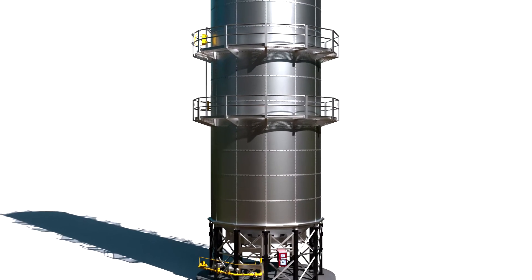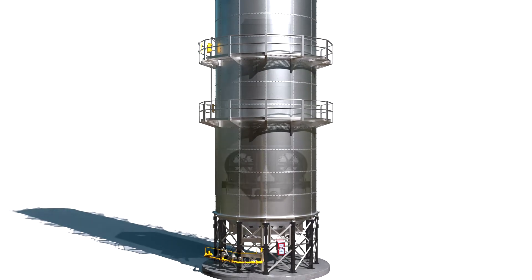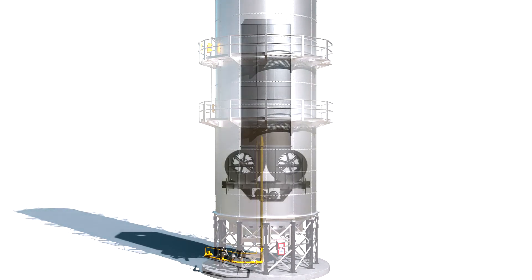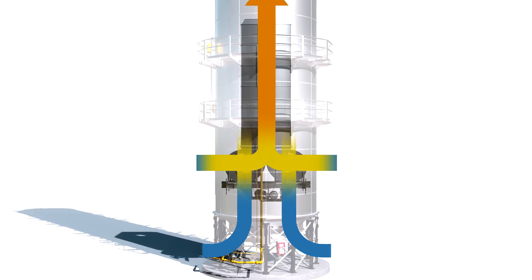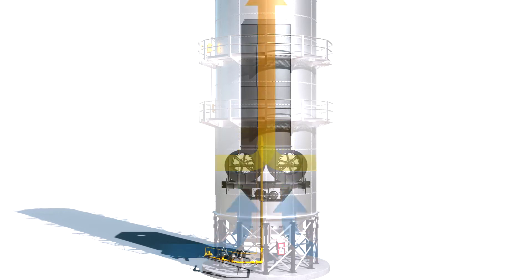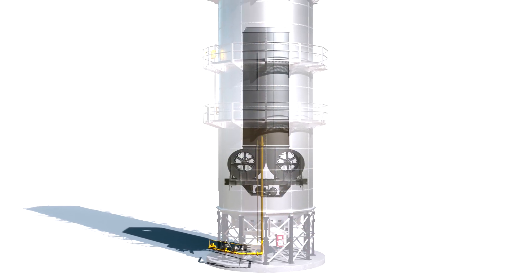Brock fans also use less horsepower and energy to cool the grain before it exits the dryer. As cool air is pulled through the grain column at the bottom of the dryer, heat is transferred from the grain and warmed air is recirculated through the burner, utilizing the energy stored in the grain during the drying process.